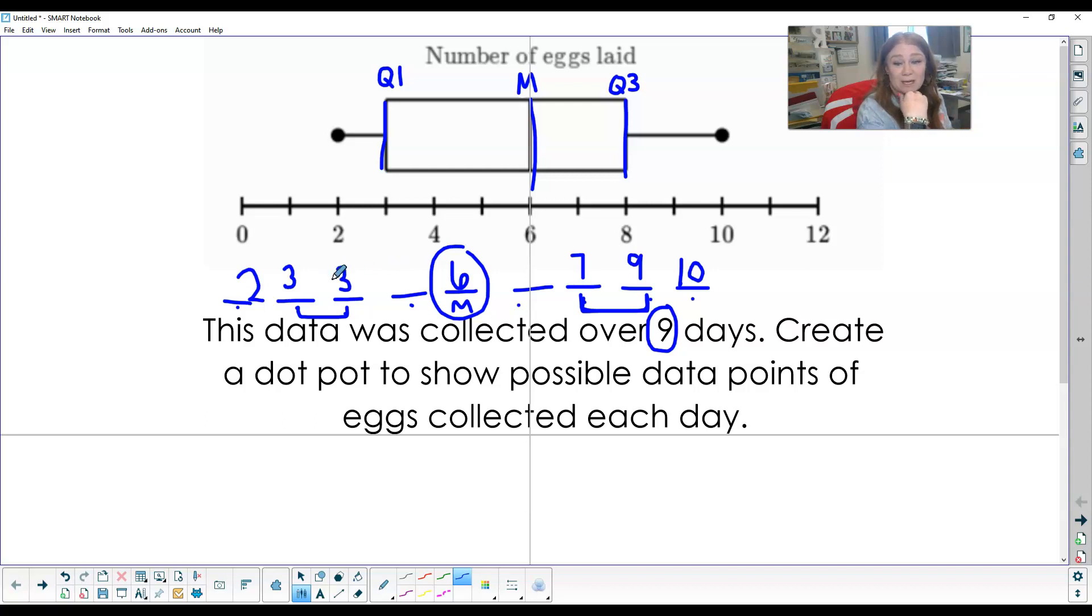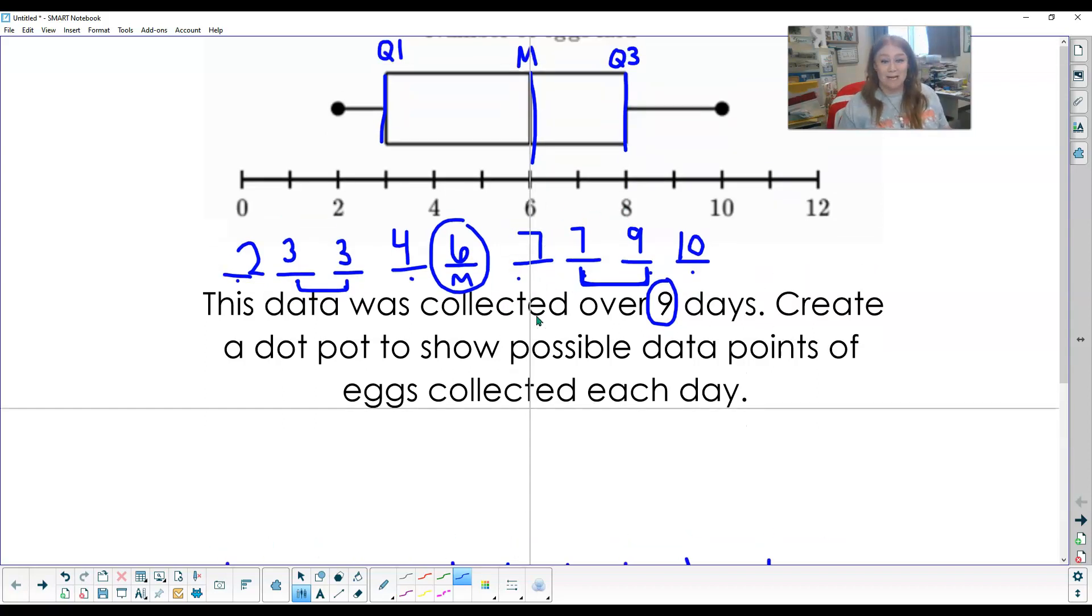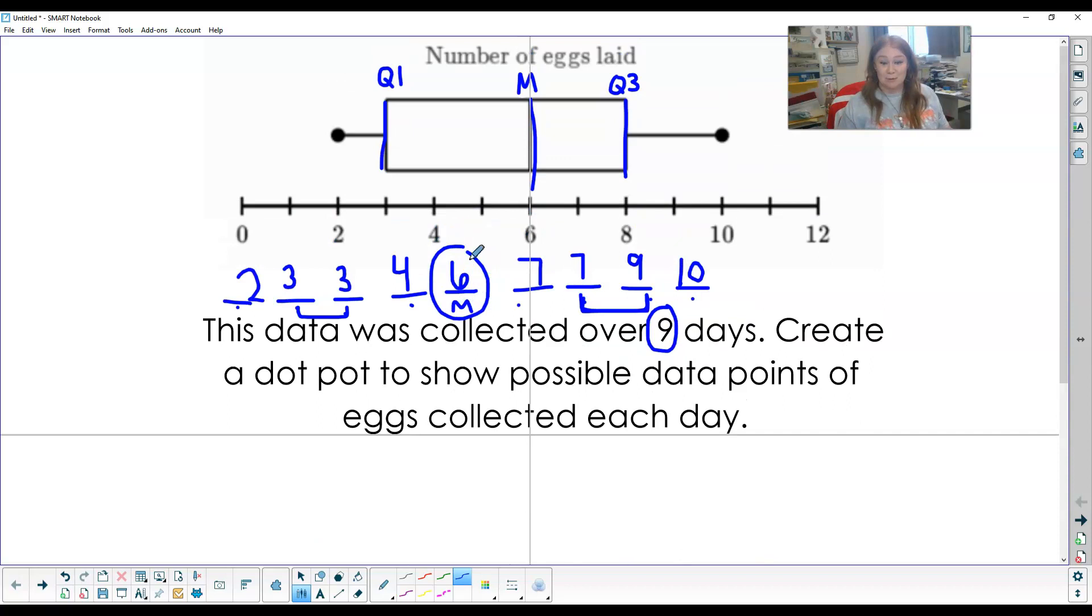This one's kind of spread out, so I'm going to throw it down as a four. And then these ones are pretty close together, so I'm going to keep it a seven to keep right in there. So I found my median right in the middle.